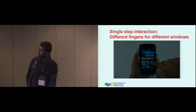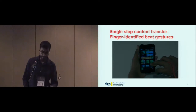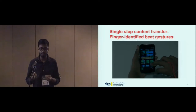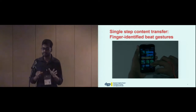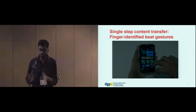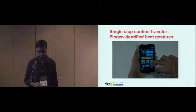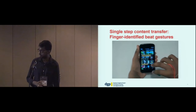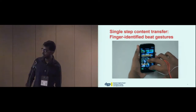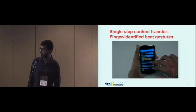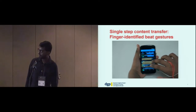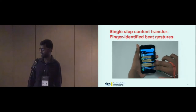The third component is single-step content transfer. Porous interfaces do this by using finger-identified beat gestures. Here a user transfers an image from the photo app to the messaging app — the user selects the image and transfers it using a simple beat gesture. We also see the user transferring tweets to the messaging app. Very simple: just select and beat.